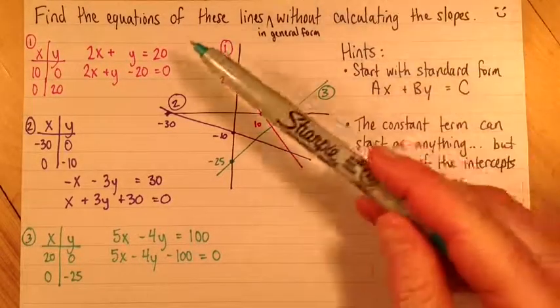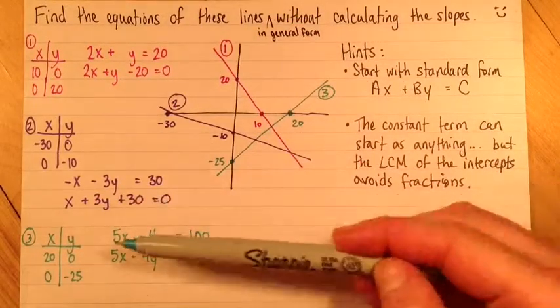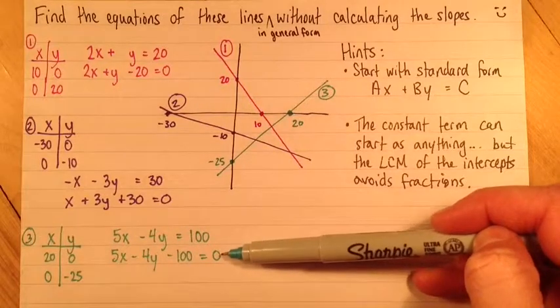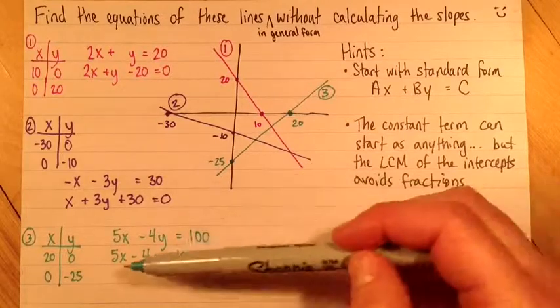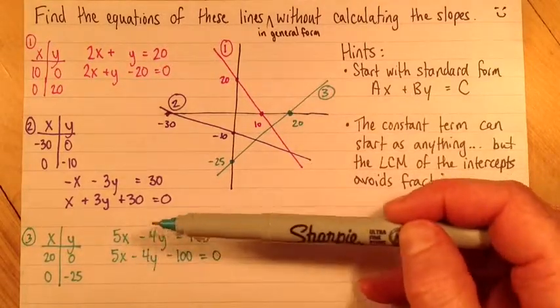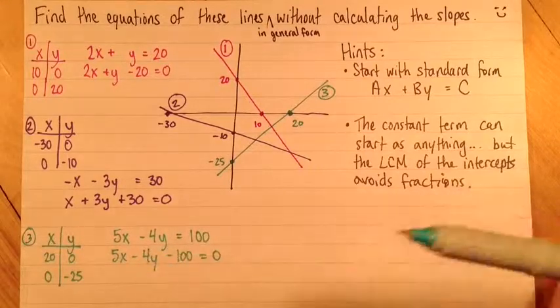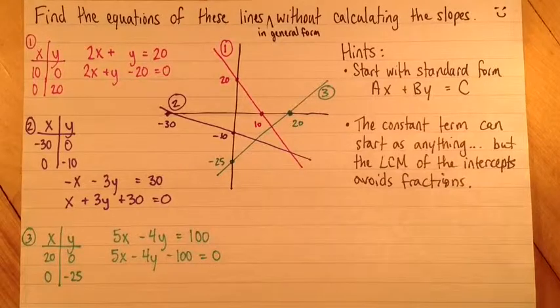I would strongly recommend that if you're doing this, once you've got the equation written down, just double-check with the two points and make sure that they actually do make the equation true. Because it's easy to do, like I did up here, get a sign backwards or something, or even to get the numbers, to get the coefficients flipped. Maybe to say negative 4x plus 5y by accident.